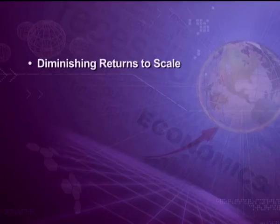The third stage is diminishing returns to scale, which means that the percentage increase in total product is less than the percentage increase in the factor inputs. For example, if labor and capital are increased by 50 percent but the total product increases by only 40 percent, the law of diminishing returns to scale is said to operate.